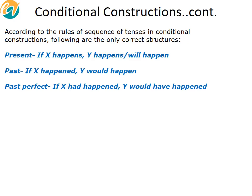These are pretty much the only three conditional constructs that you need to choose amongst. If x happens, y happens or will happen. If x happened, y would happen. Or if x had happened, y would have happened. Notice: x happens — present; x happened — past; x had happened — past perfect.